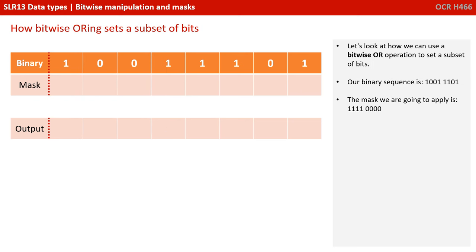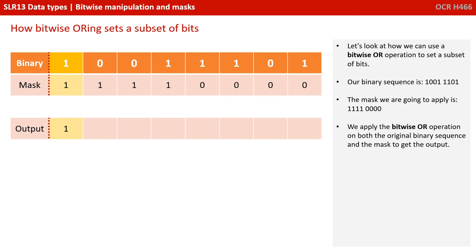Let's look at how we can use a bitwise OR operation to set a subset of bits. Again, we've got a binary sequence across the top line and then our mask — 4 ones and 4 zeros. This time we're going to apply the bitwise OR operation to both the original binary sequence and the mask to get the output.